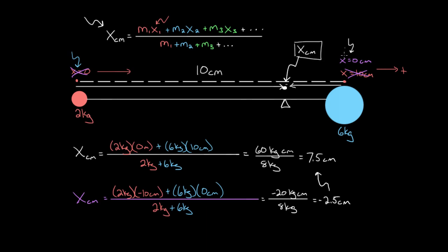It can't change based on whether you're calling this point zero or this point zero, but you have to be careful and consistent with your choice. Any choice will work, but you have to be consistent with it, and you have to know at the end, where is this answer measured from? Otherwise, you won't be able to interpret what this number means at the end.